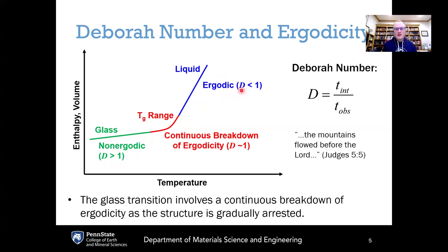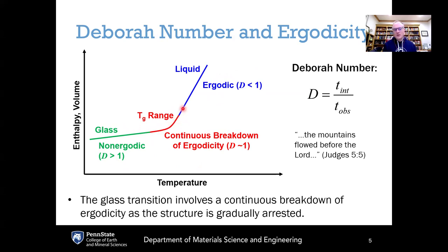If cooling continues, the relaxation timescale increases further, making the Deborah number much greater than one in the glassy state — the non-ergodic regime. The glass is a non-equilibrium, non-ergodic system. The Deborah number characterizes whether a system is ergodic (D < 1) or non-ergodic (D > 1), with the glass transition being a continuous transition between the two, either breaking ergodicity upon cooling or restoring it upon heating.